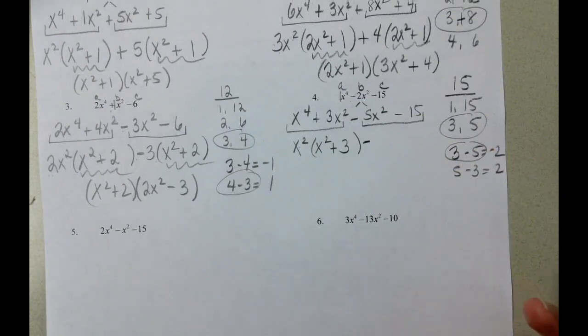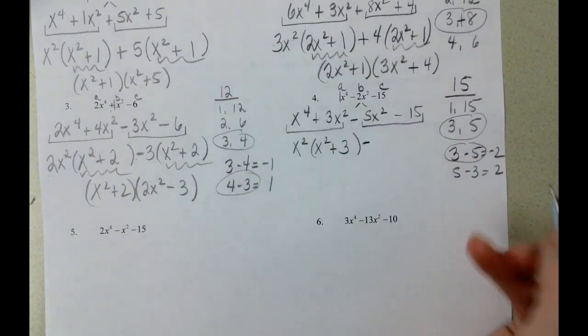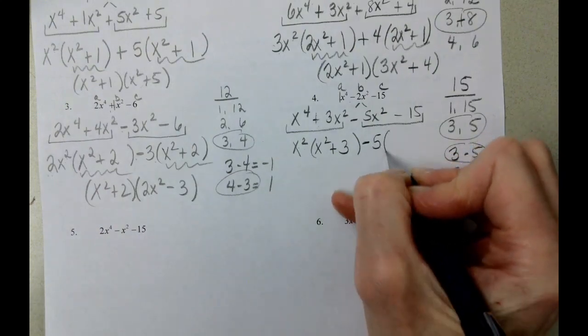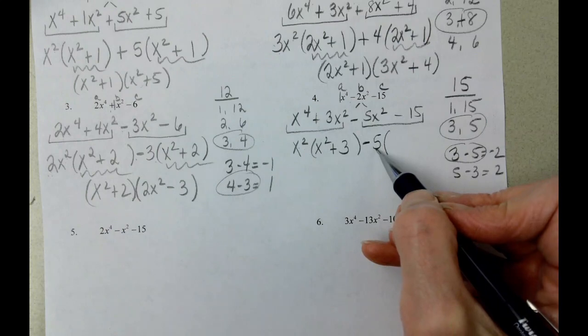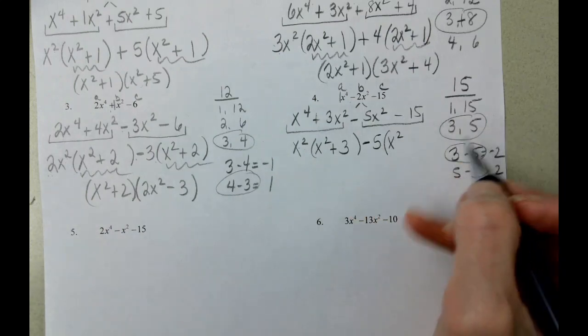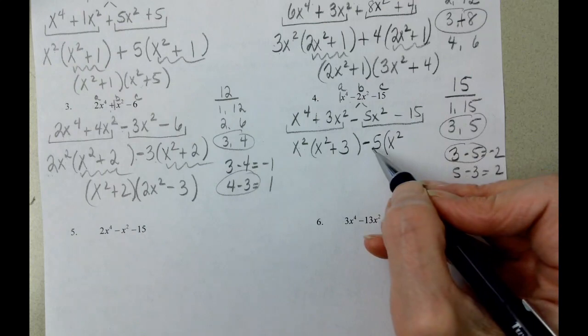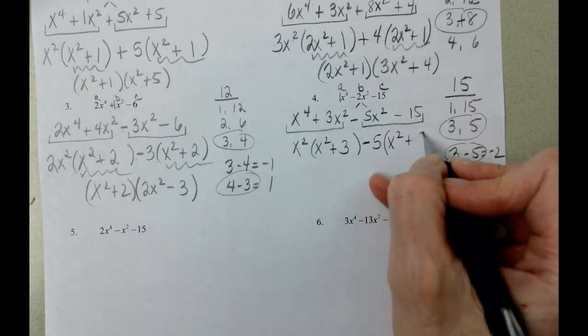In our next group, the biggest number that divides into 5 and 15 is 5. Negative 5 divided by negative 5 is 1. We didn't do anything with the x squareds. Negative 15 divided by negative 5 is positive 3.